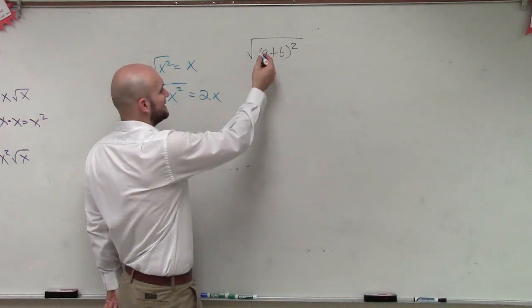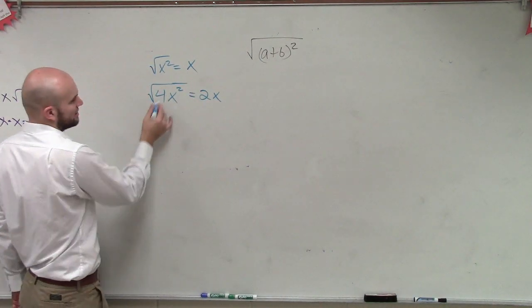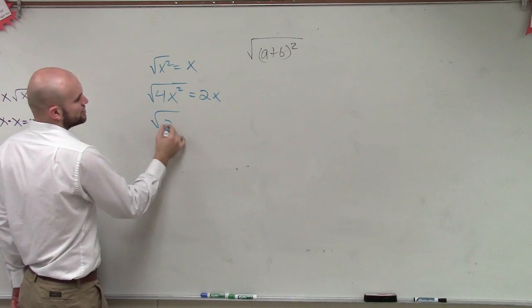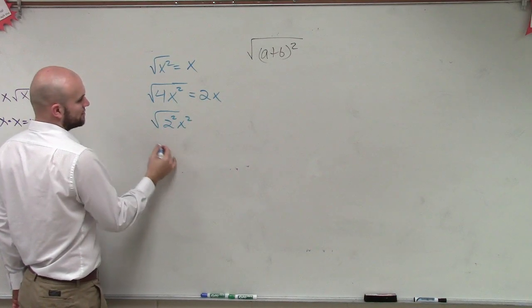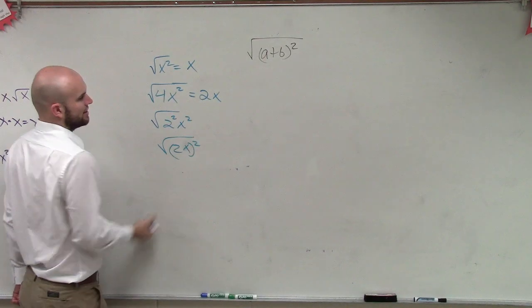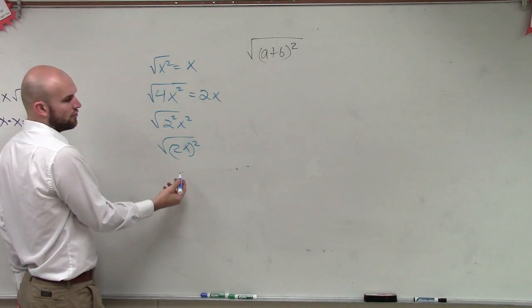So what's happening is you're undoing, or let me rewrite this into 2 squared times x squared, which can be rewritten as 2x squared. I'm just rewriting my format.